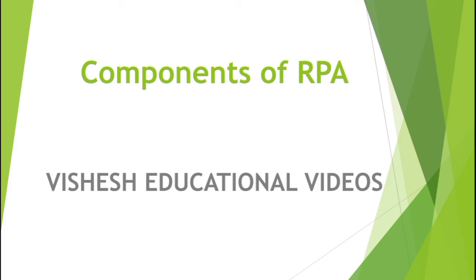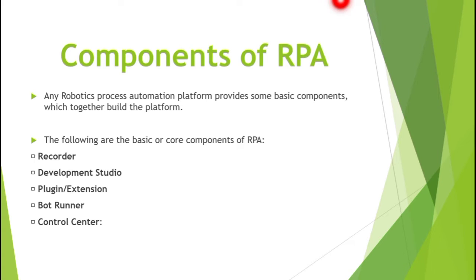In this video I will give a brief introduction about RPA and then explain its components. In simple words, Robotic Process Automation means you can do your tasks automatically by creating virtual robots — software robots — not physical robots.